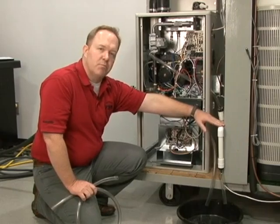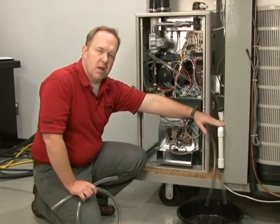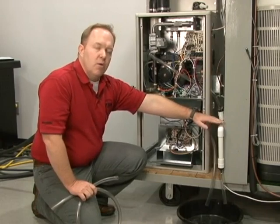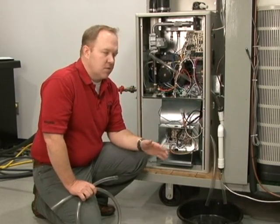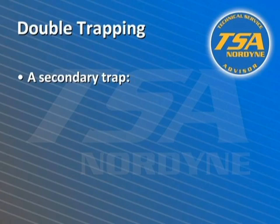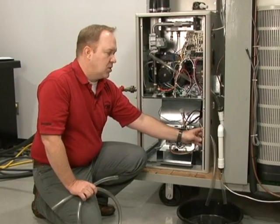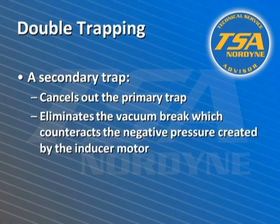where you have physically put that into the trap of that drain, that will count as a double trap. What happens in a double trap scenario is that second trap will basically cancel out the primary trap inside the furnace. Once that has happened, you no longer have a vacuum break to counteract the negative pressure being created by the inducer motor inside the furnace.